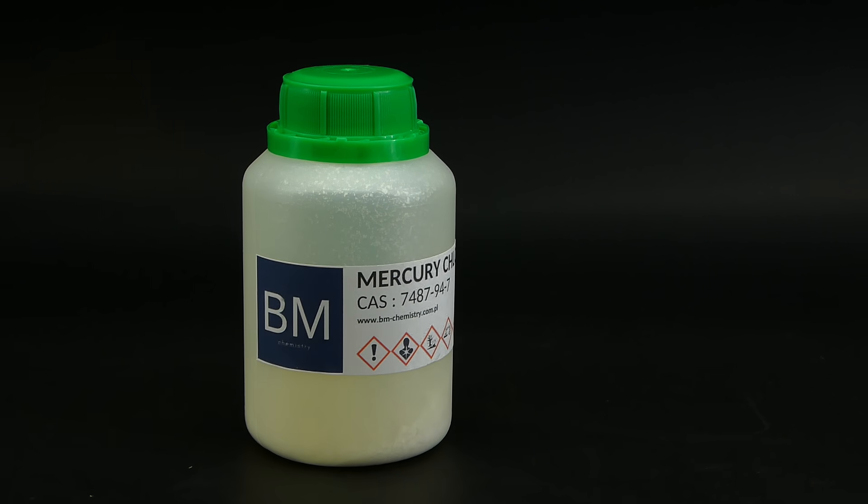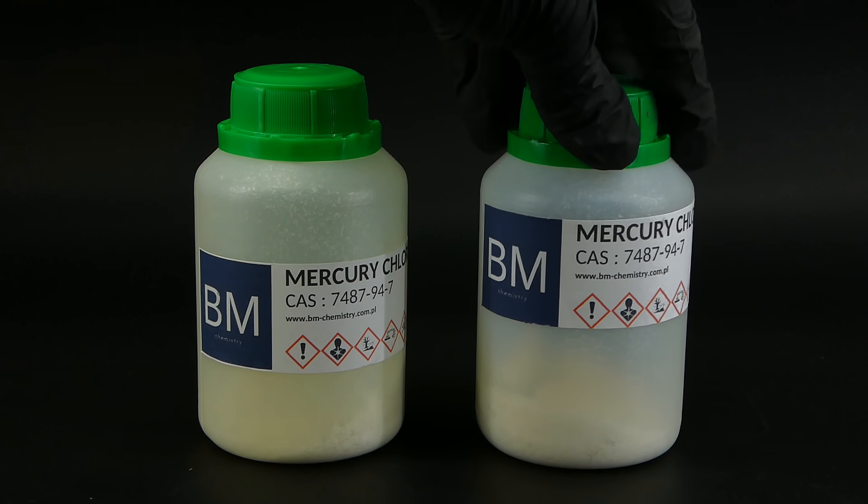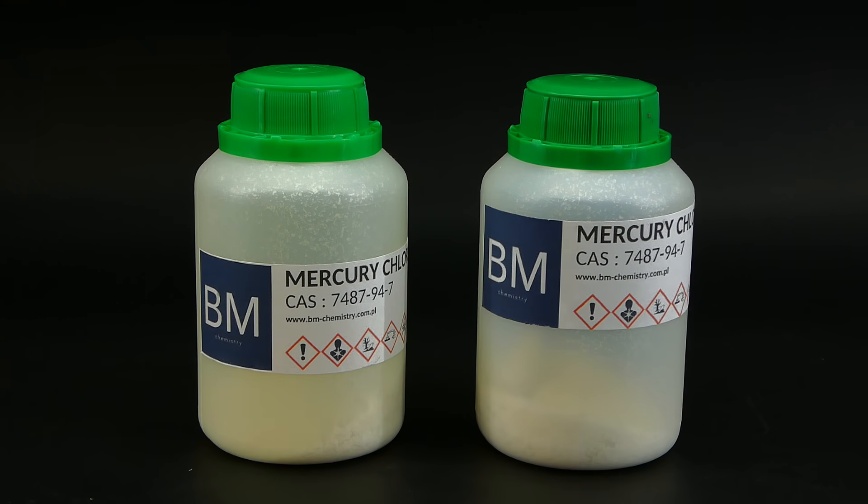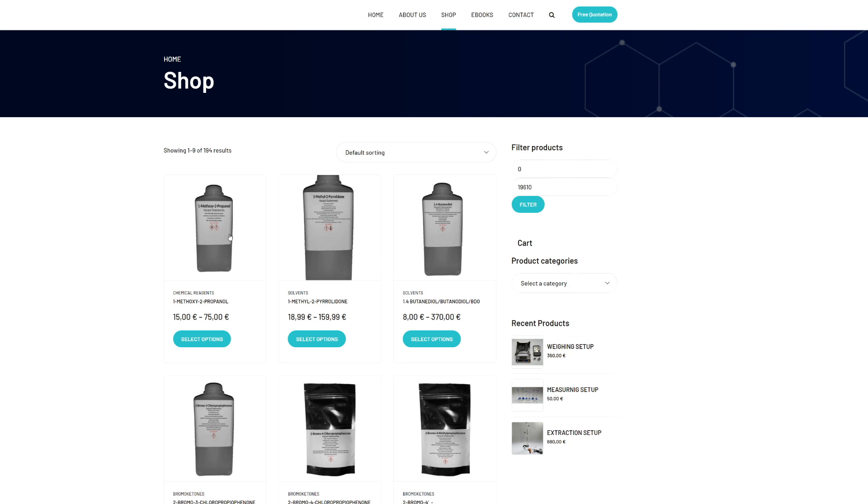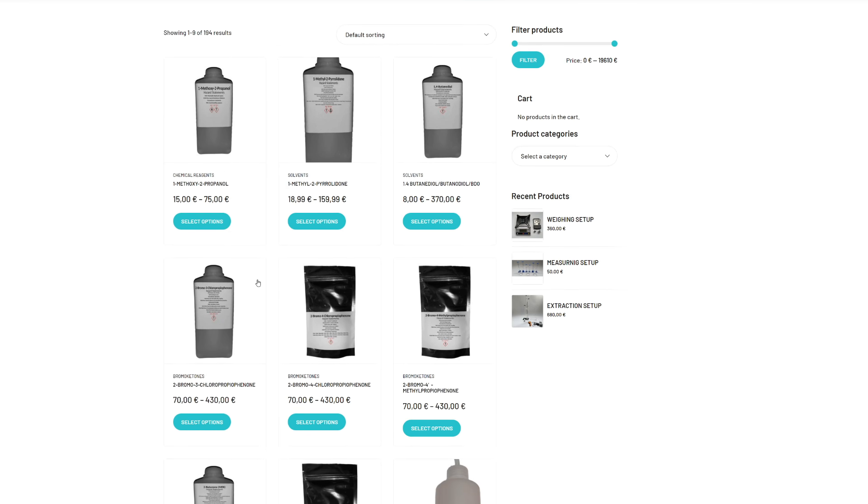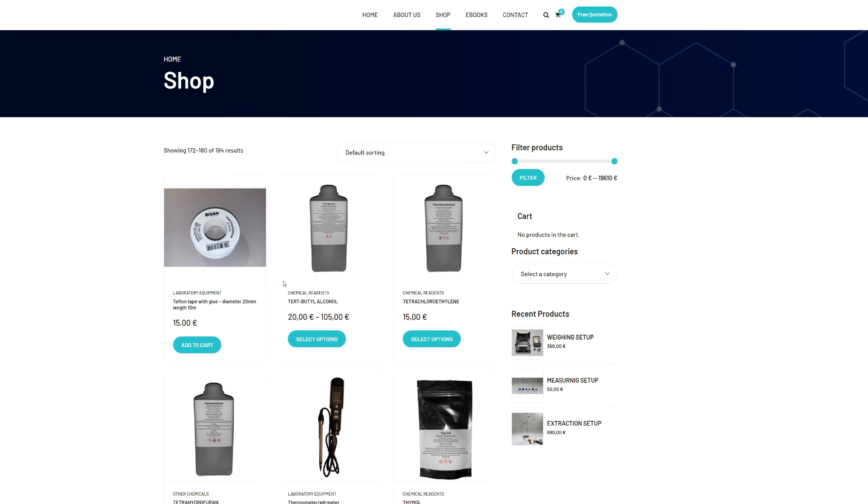Fortunately, not so long ago, I got the once in a lifetime opportunity to get some mercury from one of my sponsors, for which I am very thankful. If you also want to get some high-quality chemicals or equipment, you can check out BM Chemistry. They have a lot of cool stuff that normally is really hard to get, so I recommend you to check out their shop, to which I provided a link in the description.